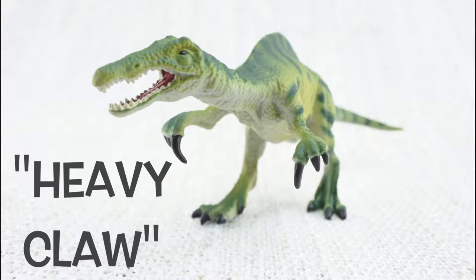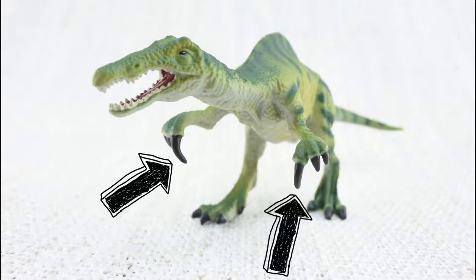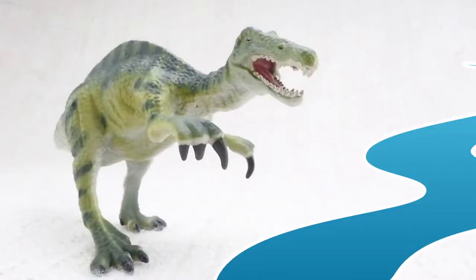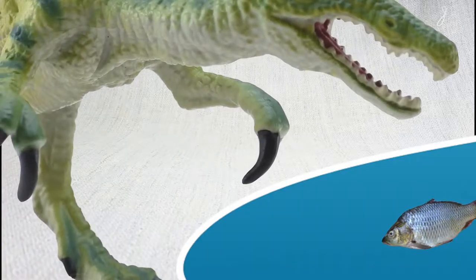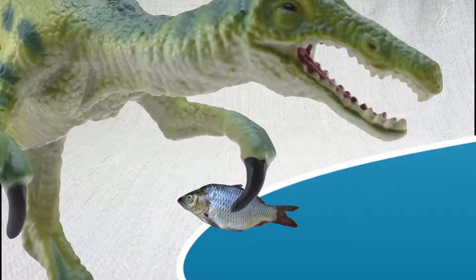Baryonyx means heavy claw because it had one large claw on each hand. It was the first dinosaur discovered that ate fish. It would use its big claws to catch them like a spear fisherman.